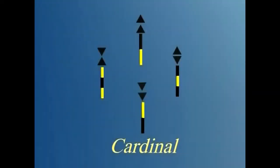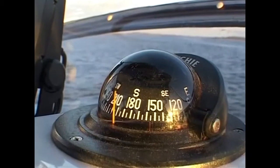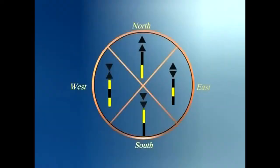There are four cardinal marks: north, east, south and west. They are used in conjunction with your compass. Each cardinal mark indicates where the safest water is found, so that you can pass by the mark safely.